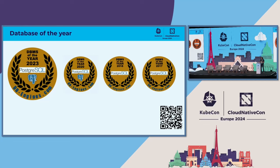Postgres has recently received significant recognition and it's been named Database of the Year by DB Engines. It's also holding the top spot as the most popular database management system, according to Stack Overflow's latest survey. In my opinion, a key factor for this Postgres success is a foundational feature that Postgres has had from day one: extensibility. With extensibility, we can basically tailor our database using data types that we create or functions that use these data types.